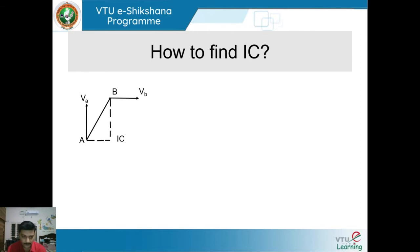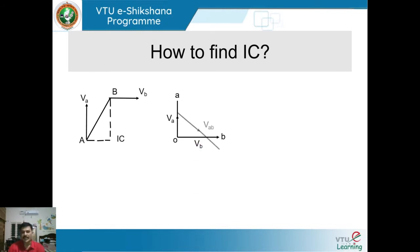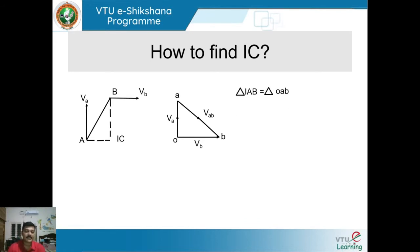Drawing the velocity diagram: VA is represented by vertical line OA, VB by horizontal line OB, and the resultant velocity is AB. We now have two triangles — IAB and OAB. Since these two triangles are similar and equal, we can use this relationship to find VA, VB, or omega.